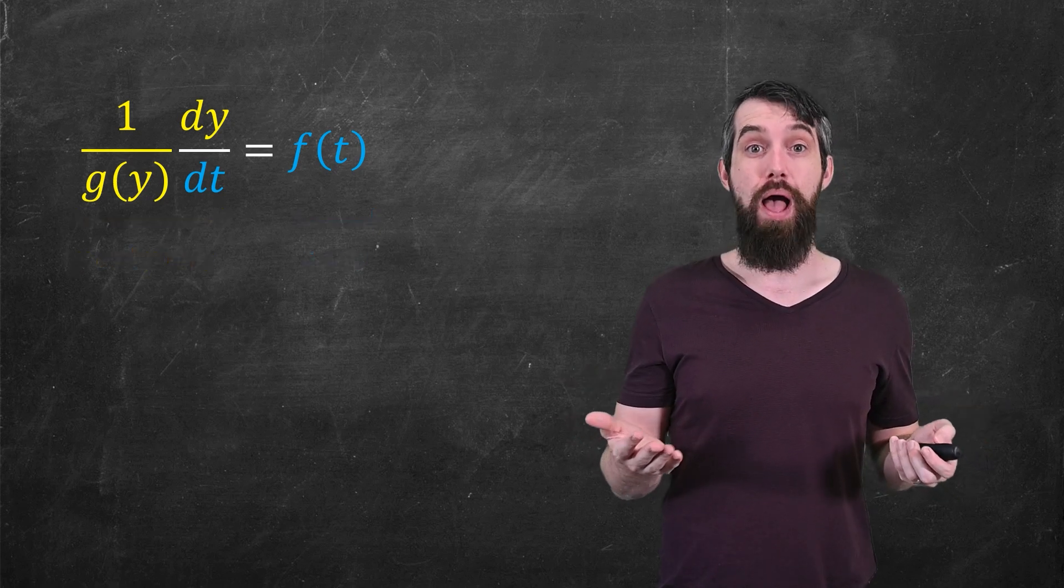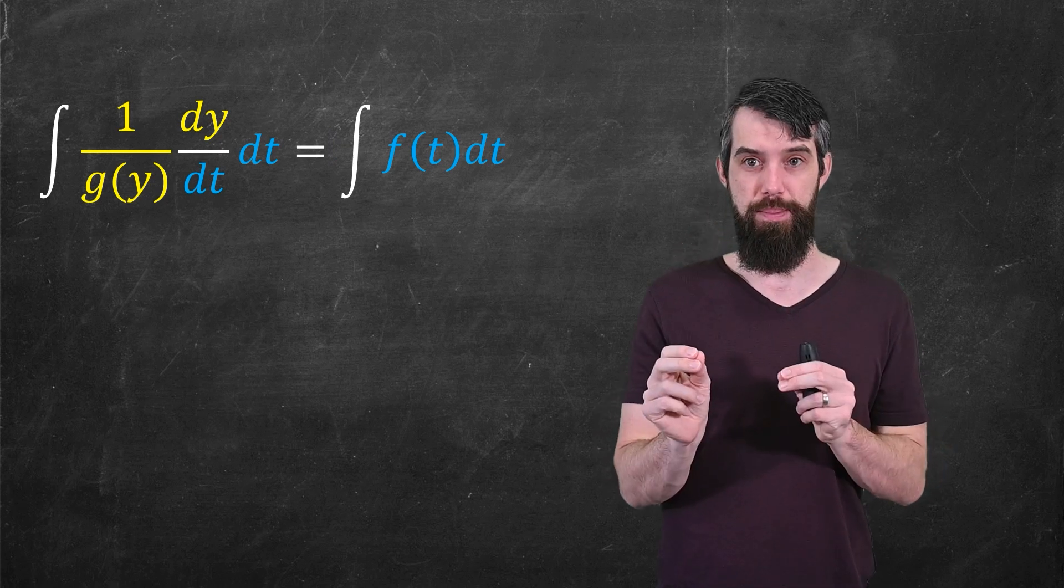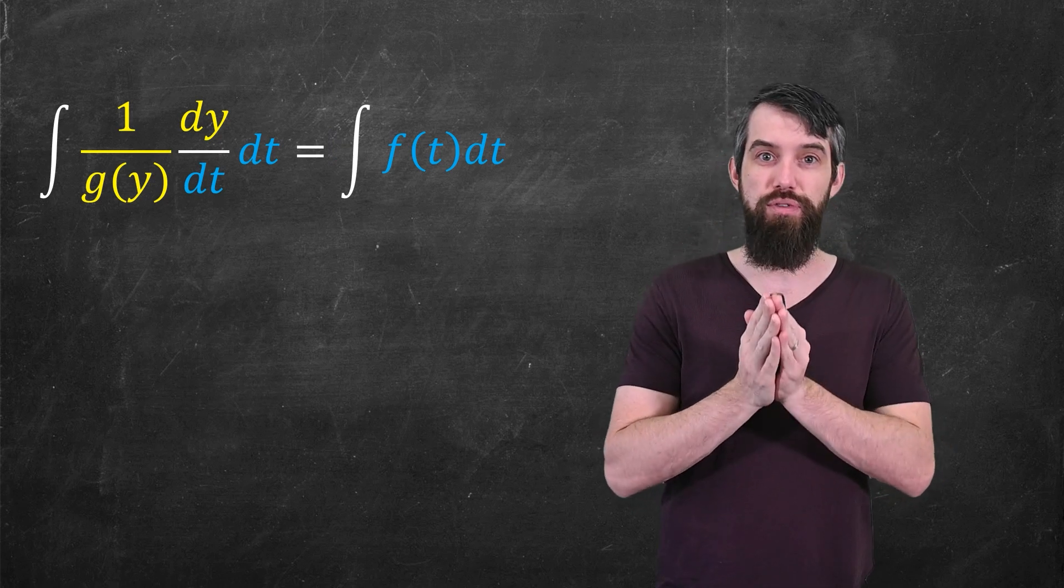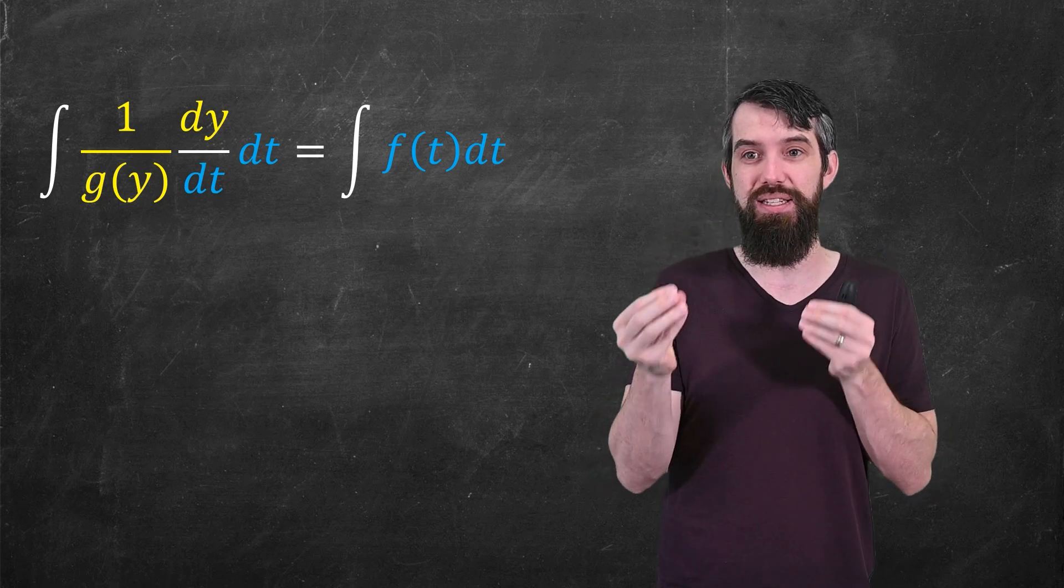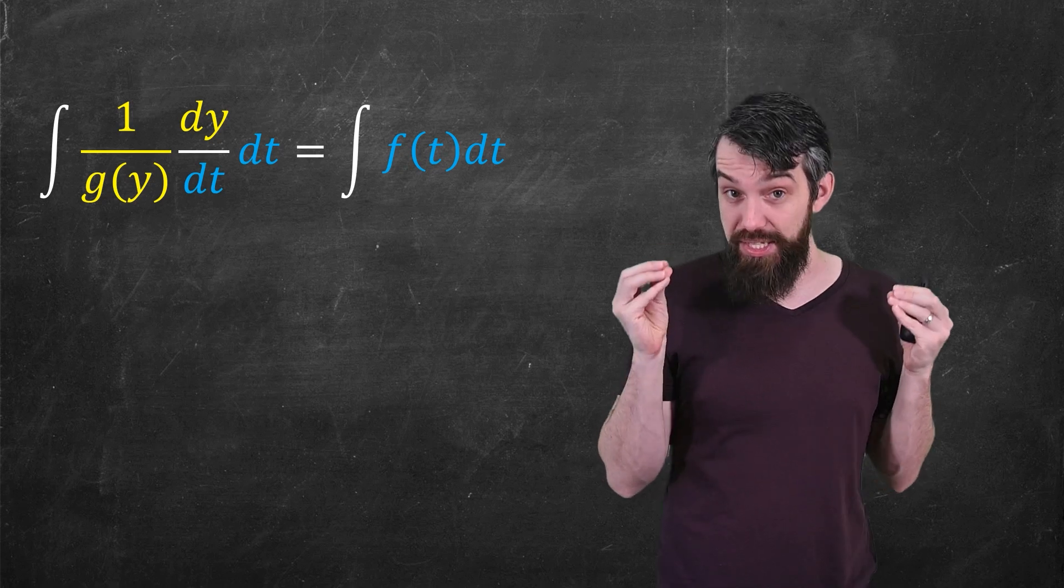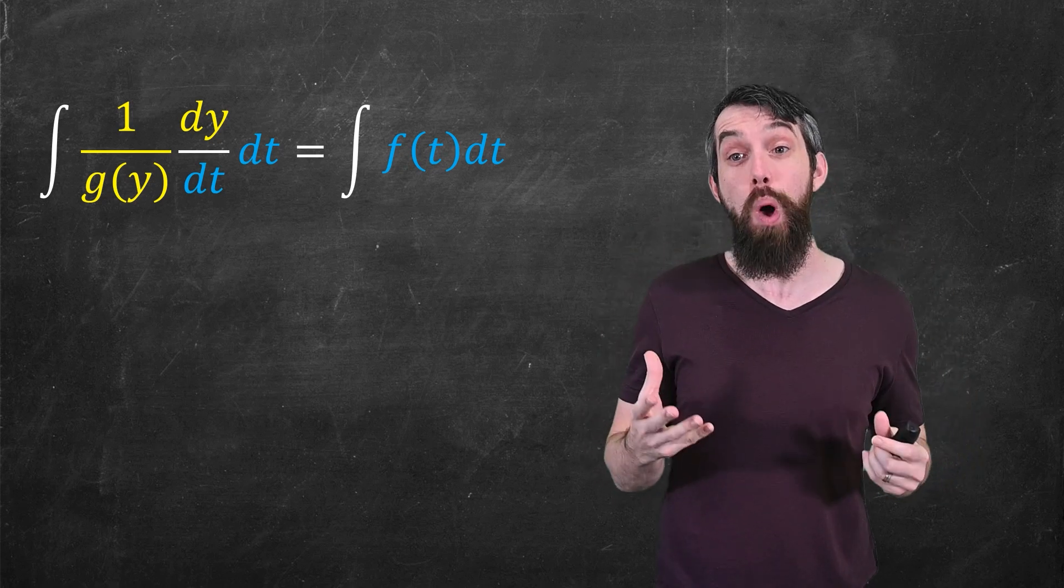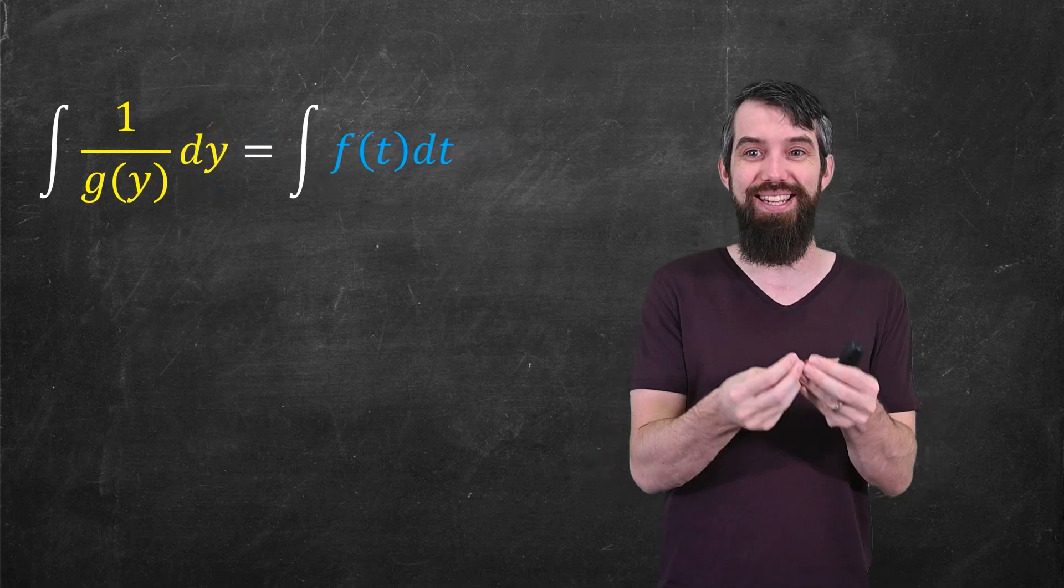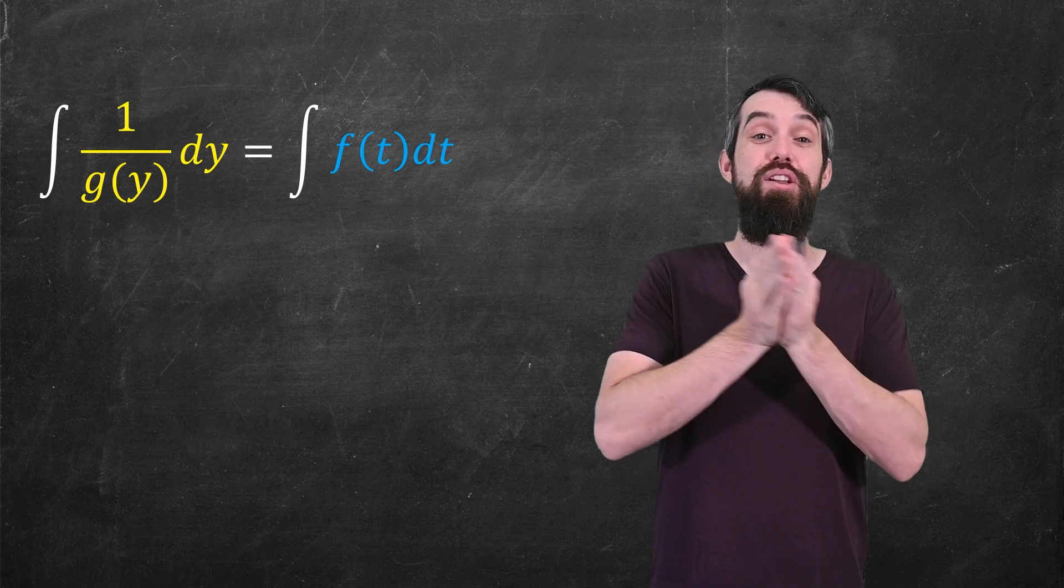Now I have an equation. I'm going to integrate both sides of that equation with respect to t. So the integral of 1 over g of y, dy/dt dt, is equal to the integral of f of t dt. I've integrated with respect to t on both sides. I'll do the same trick as before. I will define the differential dy to just be dy/dt dt, and so I get to replace that. And now I have an integral with respect to y and an integral with respect to t.